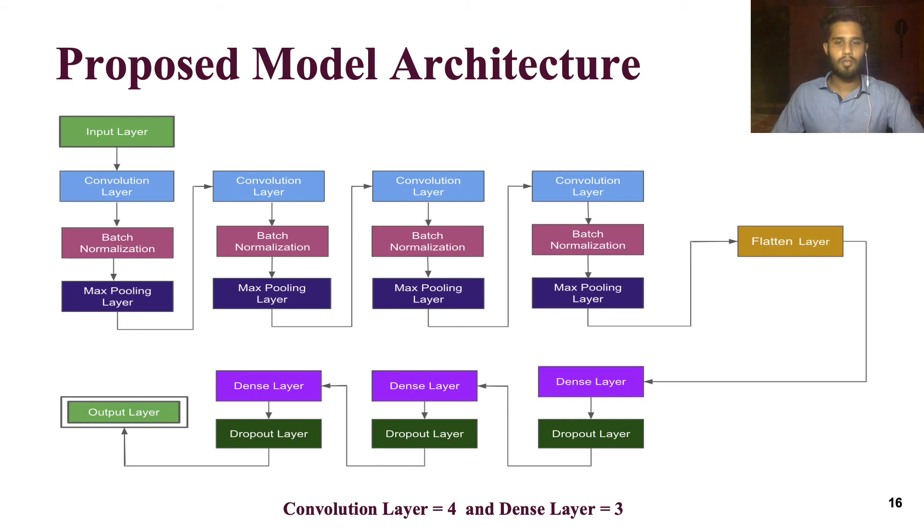This is our proposed model architecture. It consists of four segments before the flattening layer, where each segment has convolution layer, batch normalization and max pooling layer. After flattening layer, three segments exist with dense layer and dropout layer.